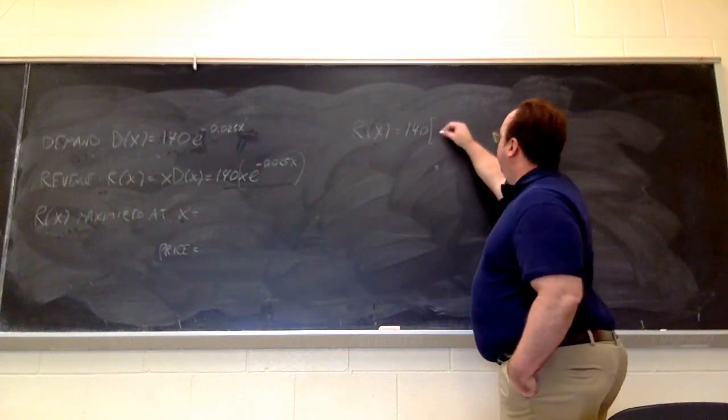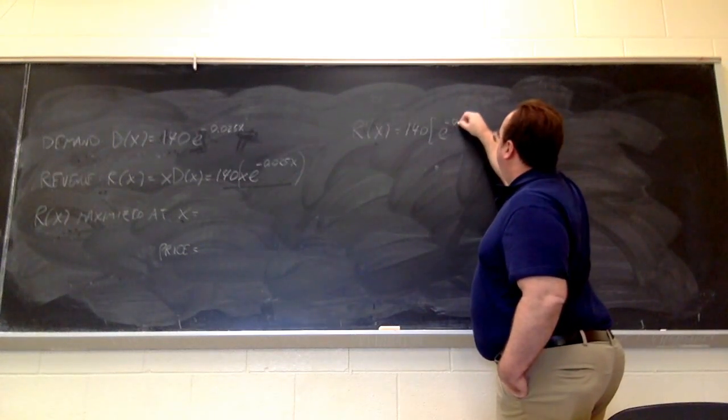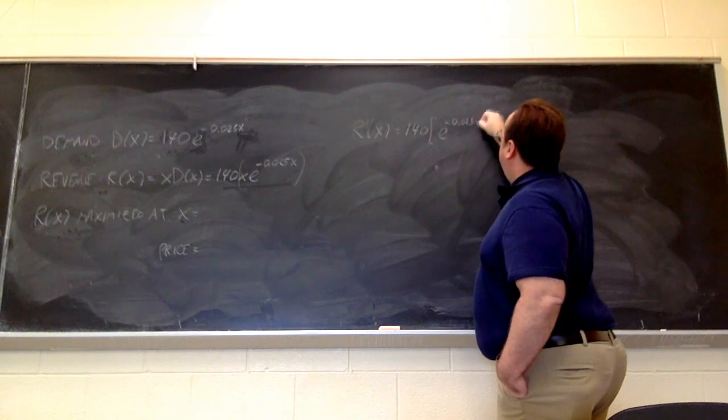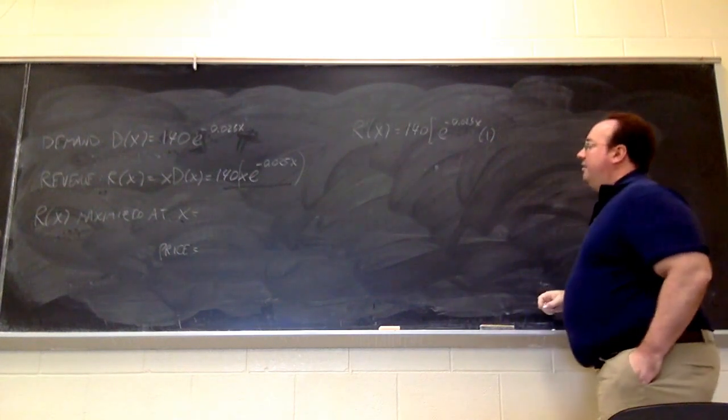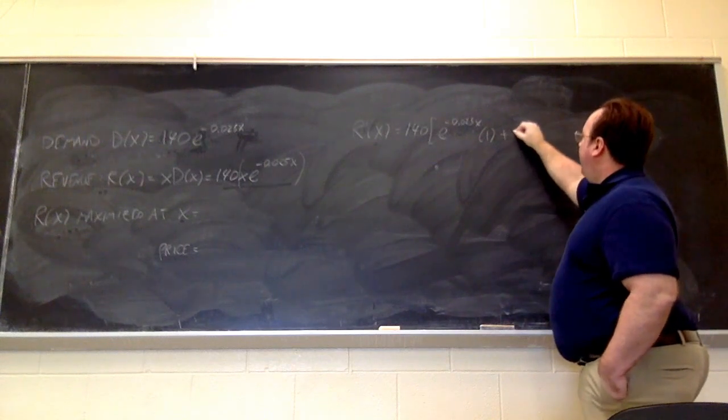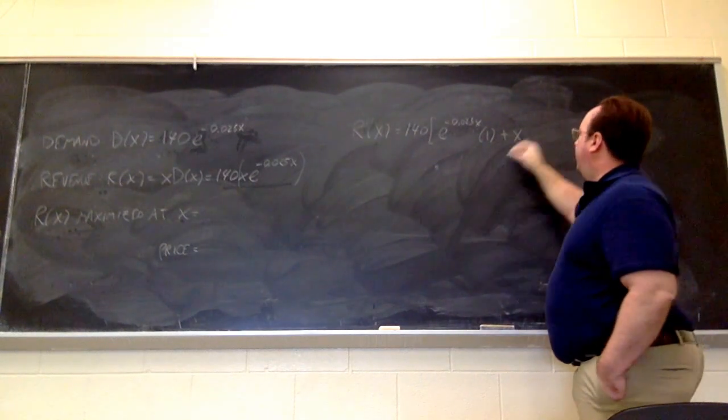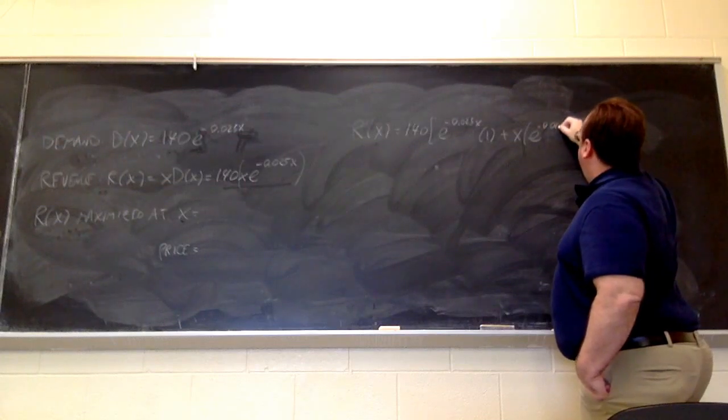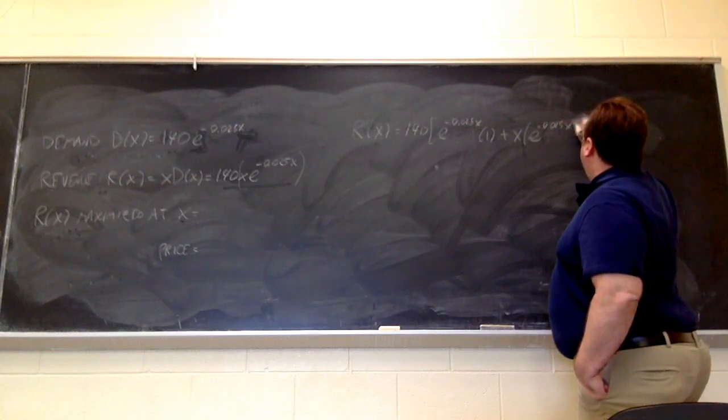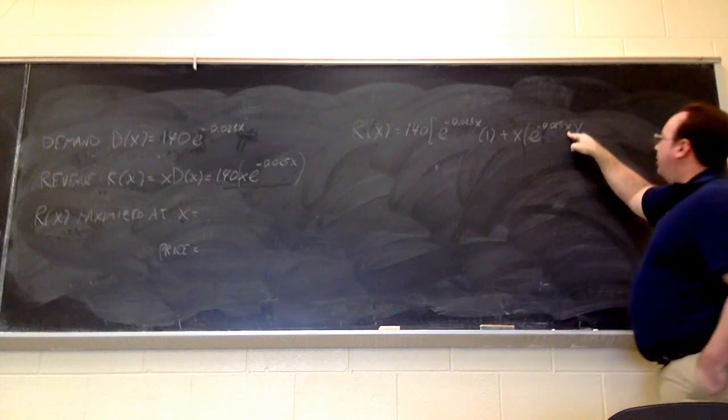So, I'm going to have my exponential function, e to the minus 0.025x, times the derivative of x, which is just 1. And then I have plus x times the derivative of an exponential function. That's going to be e to the minus 0.025x, times the derivative of the exponent.